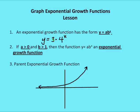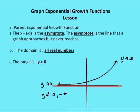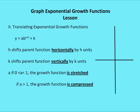Regardless of what you put in for x, you're always going to get a positive number result as long as we meet the criteria: a is greater than zero and b is greater than one. So the range will be y is greater than zero — that's your output.